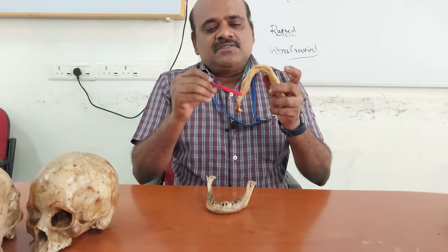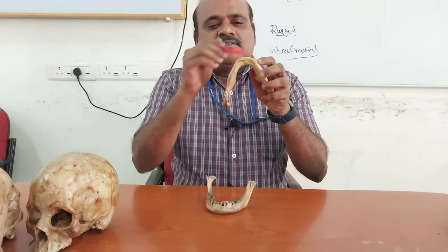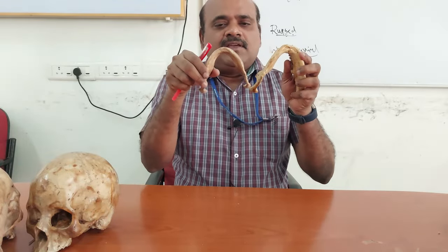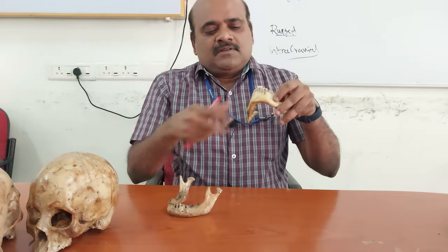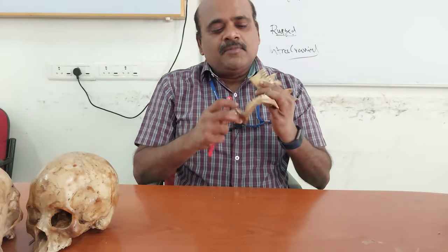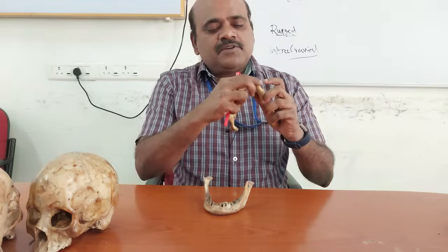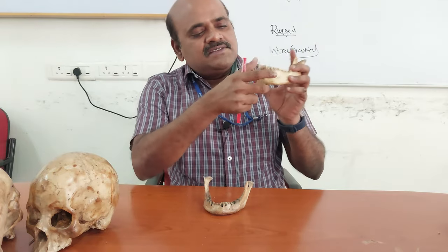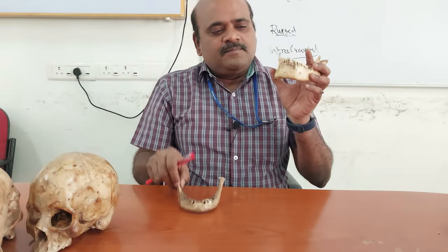In the female the shape of the chin is more rounded compared to the male. The mental tubercles are more prominent in the male mandible, whereas in the female they are not so prominent — that is why we get the square-shaped chin in the male. The body height at the symphysis menti is higher in the male mandible, whereas in the female mandible the body height is lesser at the central part.